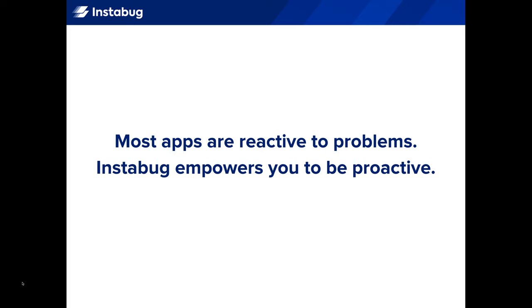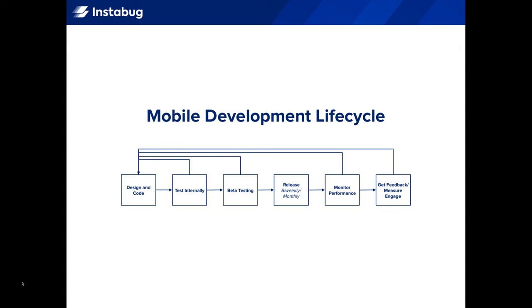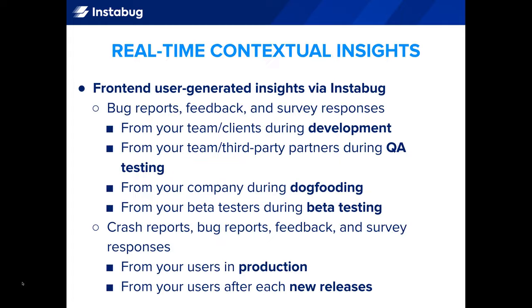Most apps are reactive to problems. Instabug empowers you to be proactive. With Instabug, you get real-time contextual insights throughout an app's entire lifecycle — when testing, debugging, monitoring, iterating, and engaging. From development to testing to launch and iterations over time, Instabug fits into all these phases, delivering real-time contextual insights. Real-time means instant, so you're hearing about issues immediately as they happen. Contextual means in the right place at the right time, so users are sending you feedback right inside your app with minimal friction. And insights are actionable information to help you make smarter decisions. You receive these user-generated insights via Instabug all throughout your mobile development lifecycle.